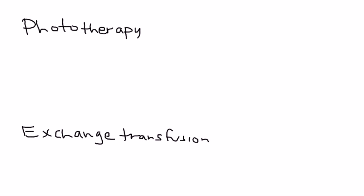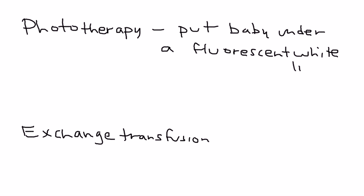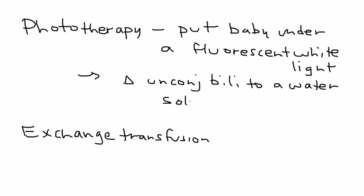Now we get into the cases where you actually do need to treat. There are two types of treatments for pathological jaundice: phototherapy and exchange transfusion. What exactly is phototherapy? Essentially, all that term means is you're putting the baby under a light, in particular a fluorescent light. This fluorescent light changes unconjugated bilirubin to a water-soluble form, and that water-soluble form can then be excreted by the body.